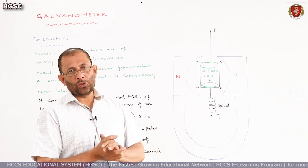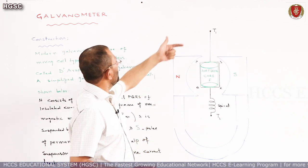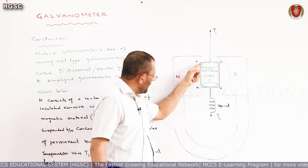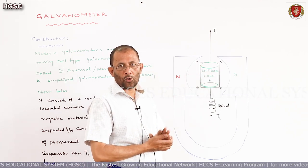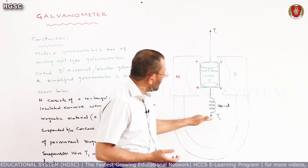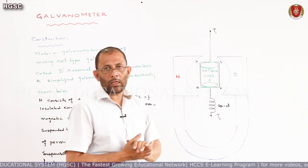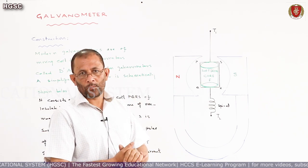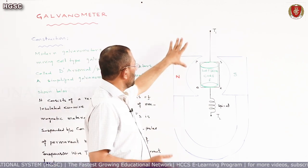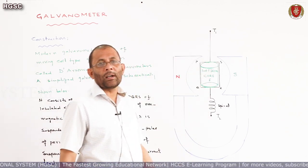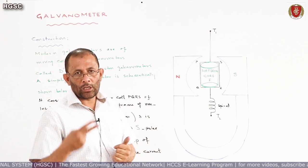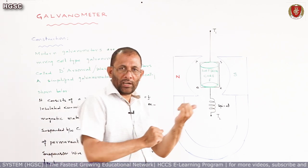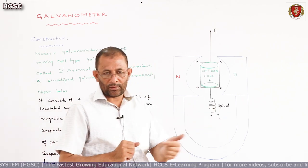If we connect the positive terminal of a DC source to T1 and the negative to T2, current flows through the coil and it rotates. If we reverse the connections, current still flows but the rotation is reversed. These two ends, the current leads, are the two wires through which current enters and exits the device.